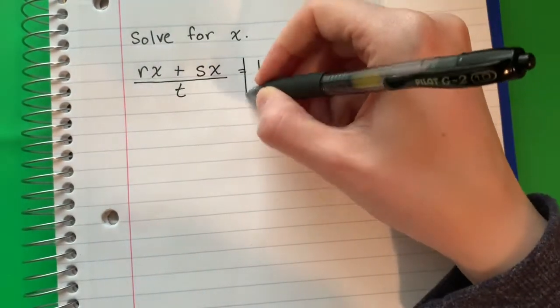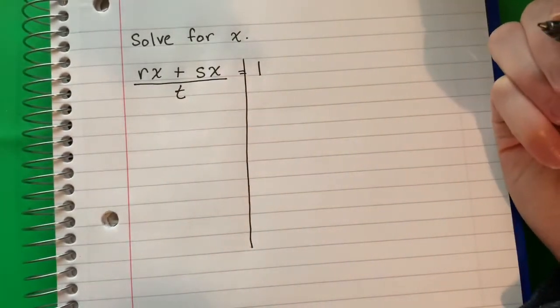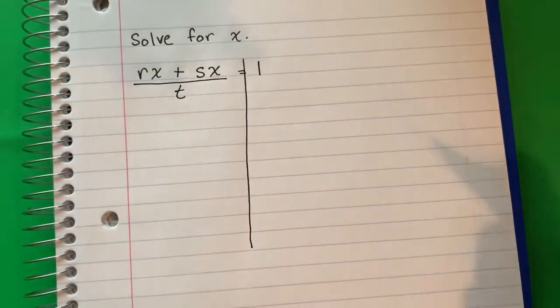First thing I will do is I will draw a line on the equal sign because I want to separate the left from the right.